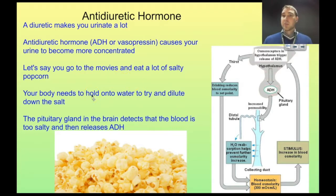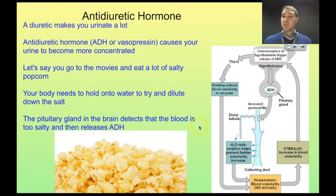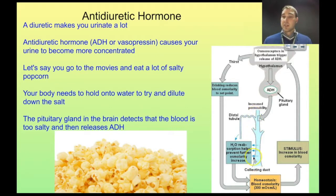If you go to the movies and eat a lot of popcorn, which has a lot of salt in it, your body will need water to dilute out that salt. Blood flowing through your brain passes by the hypothalamus, which detects the level of salt in your blood. If you have too much salt, your body needs more water, so the hypothalamus releases antidiuretic hormone. That hormone travels to your kidneys and causes them to increase the amount of reabsorption of water. So urine making its way into the collecting duct has lots of water absorbed from it, meaning what goes into the renal pelvis and bladder has low amounts of water and higher amounts of salt.